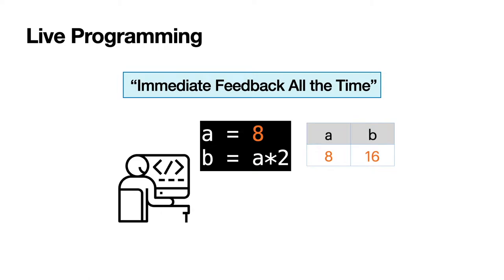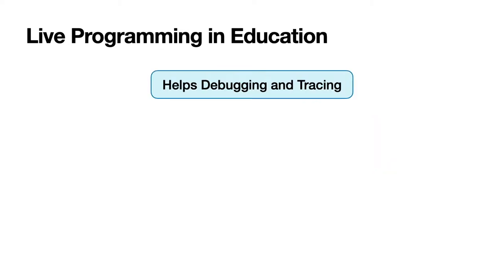As you see, live programming environments always show the programmer how their code is being executed at runtime. The programmer could directly use such information for their programming needs without additional effort, because it has already been generated for them by live programming. Therefore, live programming can be especially useful in programming education because the information it provides could potentially help with debugging and tracing, which are among the most cited difficulties in programming faced by novice programmers.